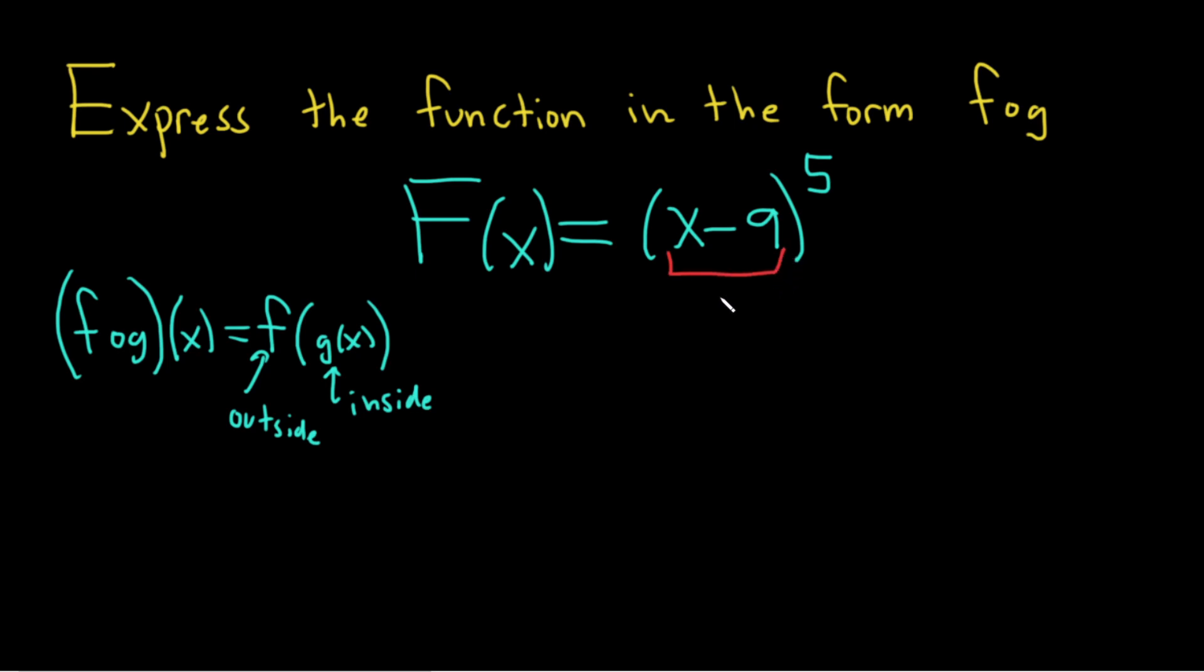So the inside function here is simply X minus 9, and so the outside function is going to be something to the fifth power. So let's go ahead and write G of X equals X minus 9, and then little F of X will be X to the fifth power.